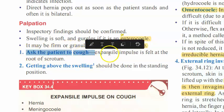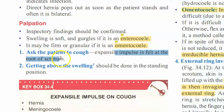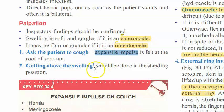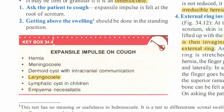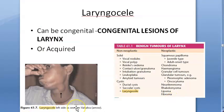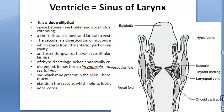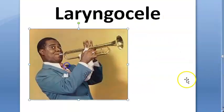When you ask the patient to cough, expansile impulse is felt at the root of the scrotum — you feel something expanding. That is the expansile impulse, which is diagnostic of hernia. Note that expansile impulse on cough is also seen in laryngocele, particularly in trumpet blowers and glass blowers. In the neck, laryngocele increases on Valsalva maneuver — but obviously the location is very different.